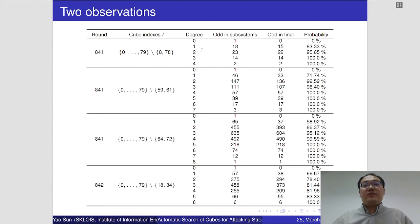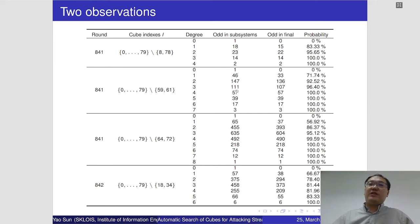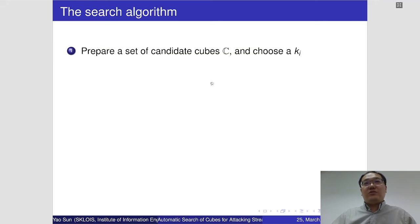There are some data supporting these observations — we cannot prove them formally, but the data provides supporting evidence. The data shows statistics of the monomials in the superpolys, sorted by degree. The fourth column shows how many monomials appear odd times in the subsystems, and the fifth column shows how many of those still appear odd times in the whole system, with the ratio given in the last column. From the data, we can see that the higher the degree, the higher the ratio. With these two observations, we give a heuristic algorithm to search for valuable cubes.